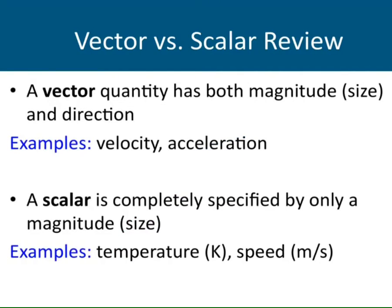In physics, there are some quantities — physical quantities — that need extra information. For example, if I say I'm going at 10 meters per second velocity, the next question you'll ask is: in which direction? I can give you the magnitude of my velocity, but the direction is also important. Similarly, if somebody is pulling you with a force of 10 newtons, the next question is: in which direction?